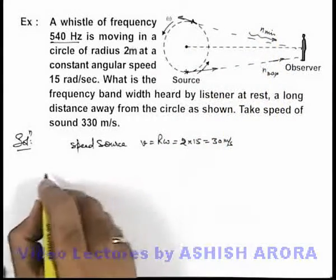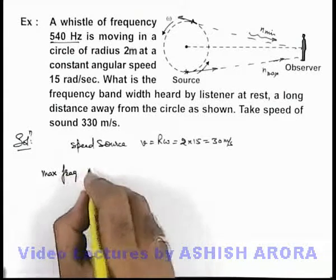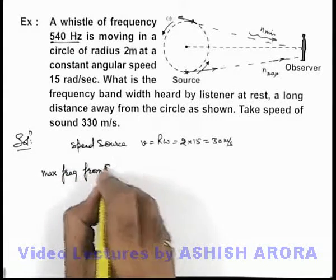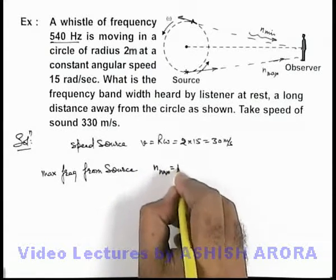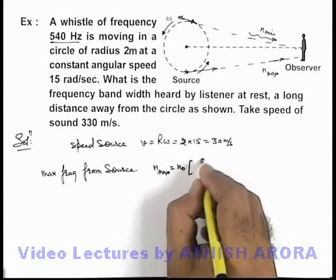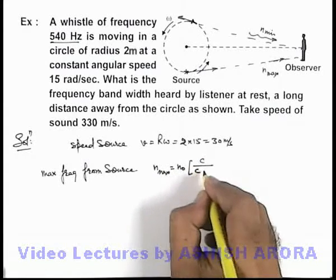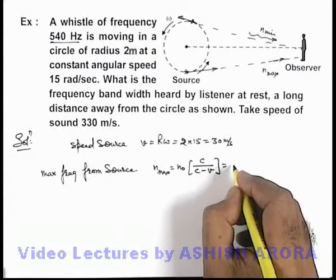So we can easily find out the maximum frequency from source. It will be n_max, which can be written as n₀ multiplied by c/(c - v_s), where v_s is the speed of source.